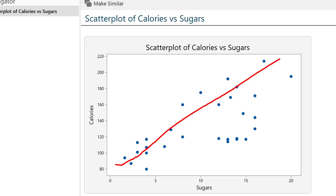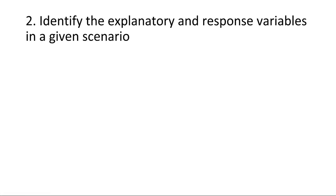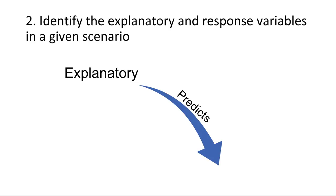I'll take you back to the PowerPoint slides now to keep working through our learning objectives, but we'll be back here later to compute Pearson's R correlation coefficient and to construct a simple linear regression model using these data. Our second learning objective is to identify the explanatory and response variables in a given scenario. The explanatory variable predicts or explains variation in the response variable.